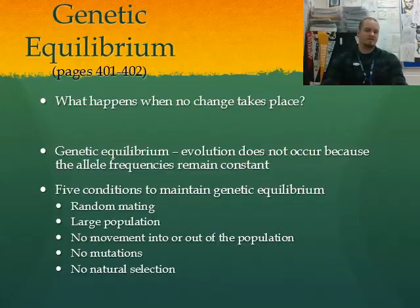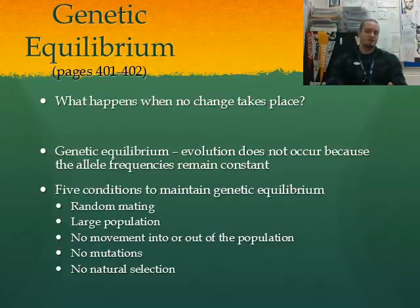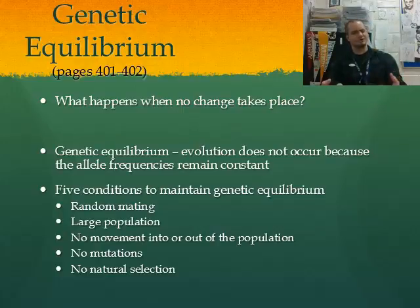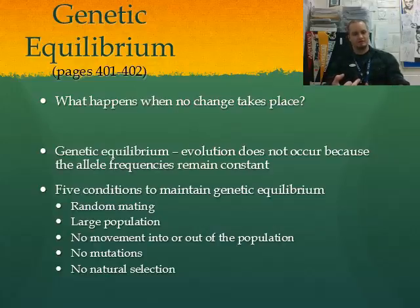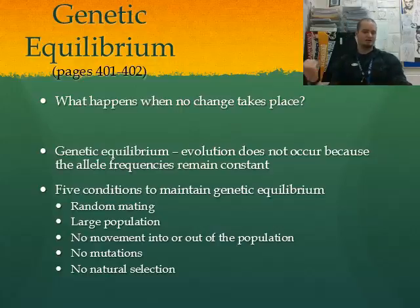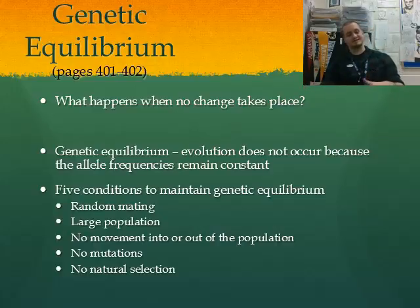Genetic equilibrium is what happens when no changes at all take place — evolution does not occur because allele frequencies remain constant. Five conditions needed to maintain genetic equilibrium are: no random mating, a large population, no movement into or out of the population so genes become stagnant, no mutation, and therefore no natural selection — because nothing is advantageous to have.